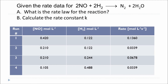The first column represents the run number, telling you how many times the experiment has been repeated. The remaining two columns represent the concentrations of the reactants — nitric oxide and hydrogen. The last column gives the initial rate of the reaction for the given concentrations. Using this information, we are going to determine the order of each reactant.